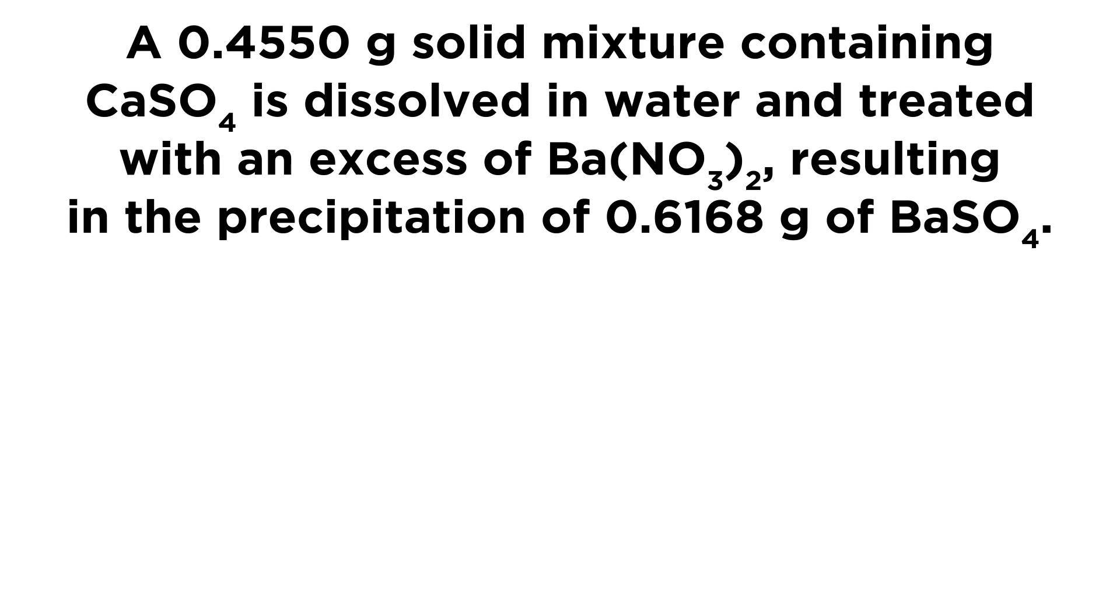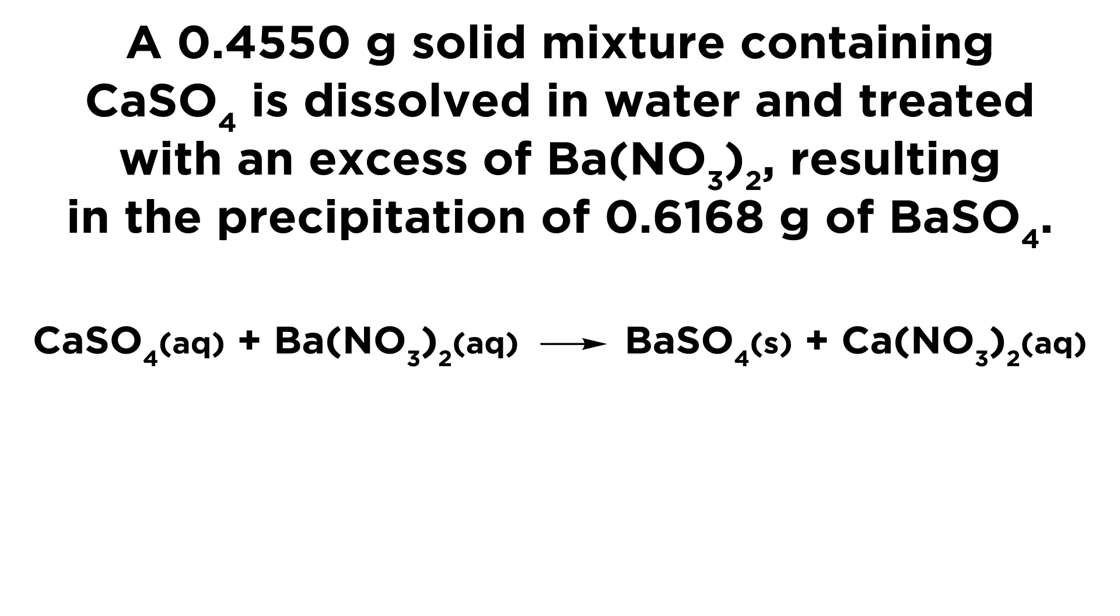So the question is, a 0.4550 gram solid mixture containing calcium sulfate is dissolved in water and treated with an excess of barium nitrate, resulting in the precipitation of 0.6168 grams of barium sulfate.